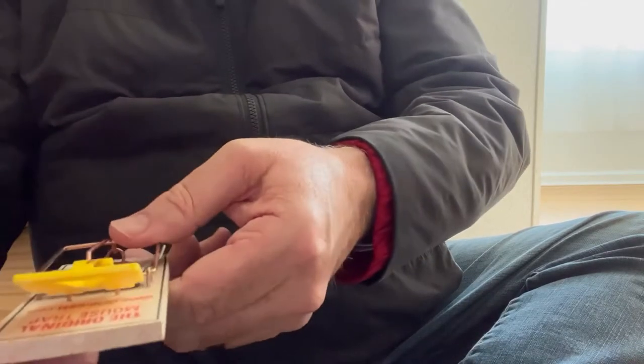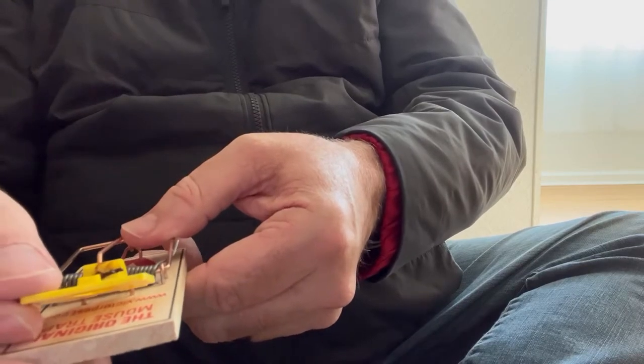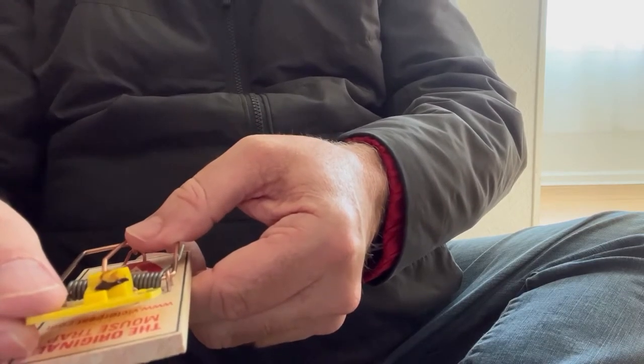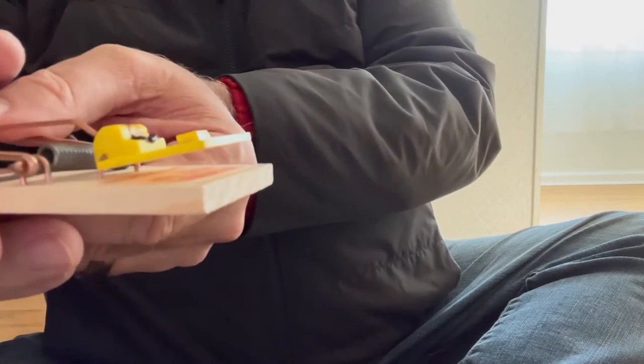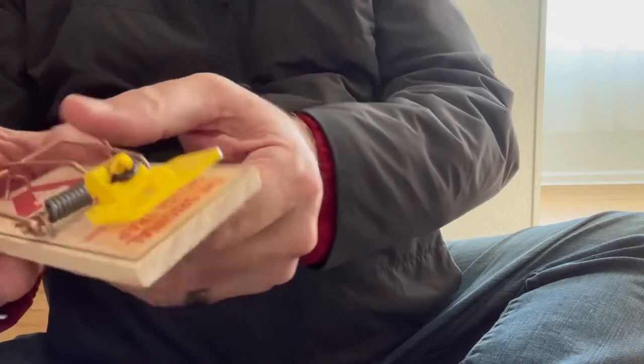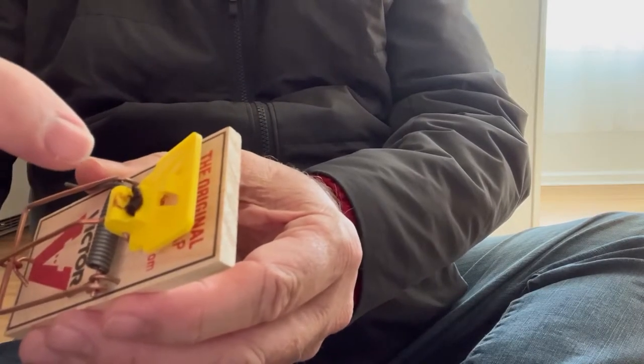So you can keep your thumb right here holding it so it doesn't snap your finger, and you can just adjust it just a little bit. See, I'm just doing it so it's just very low. I put here - that's the bait. I don't want to touch that because it'll snap my finger, but I put just a little bit of bait.